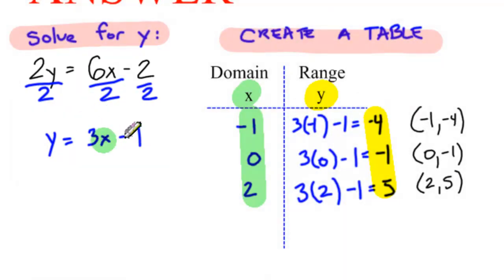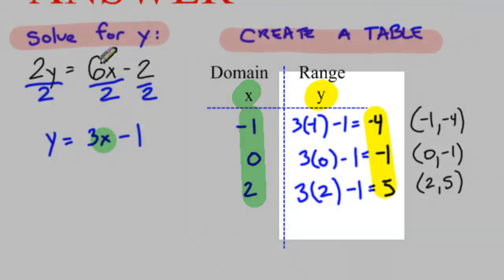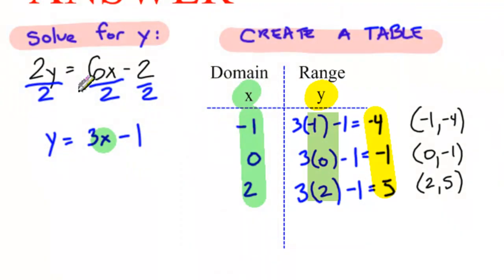The next step is to pick your own domains. A little tip for you is that you should pick the easiest numbers to work with. I always like picking 0 and 1 or negative 1 because those numbers are easy to plug in. Once you've picked your domains, plug them into your equation to get your ranges. And the last step is just to plot your points.